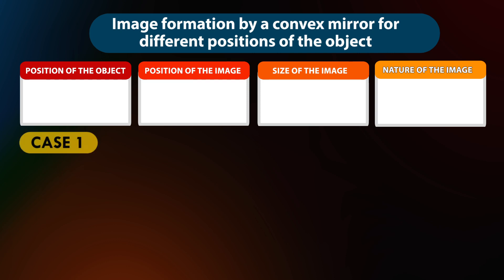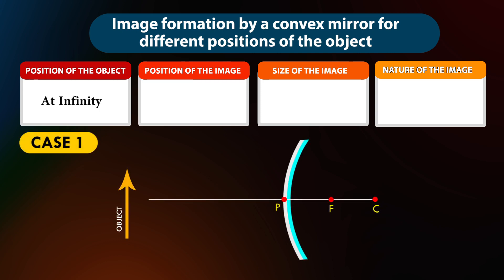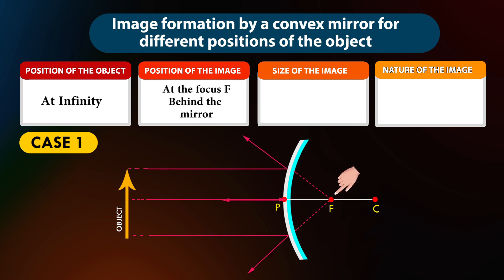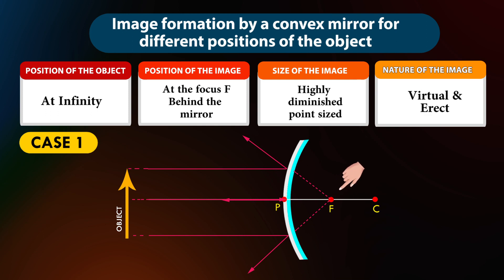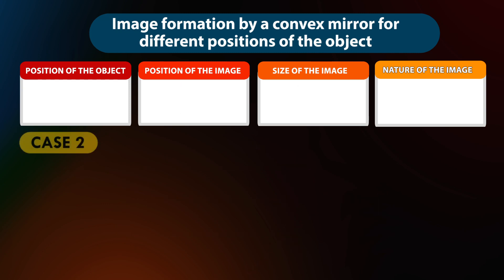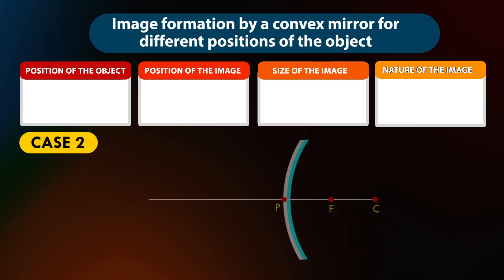Case 1: If the position of the object is at infinity, the position of the image will be at the focus behind the mirror. The size of the image is highly diminished and point-sized. The nature of the image is virtual and erect.